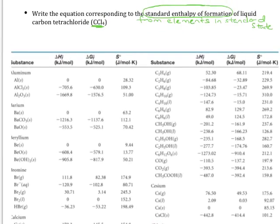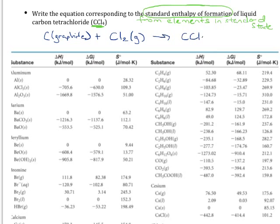So when I go back up here to write my equation, I'm going to make sure that I start with carbon in its standard state, which is graphite. I'm going to react that with chlorine, which is Cl₂ and a gas, in its standard state, to form carbon tetrachloride, which is a liquid, as they tell us in the problem.